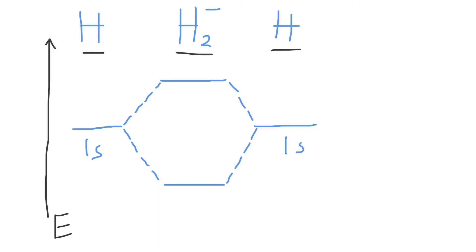Then, just like you would with an energy level diagram or an electron configuration diagram, you need to draw in your valence electrons for the atomic orbitals and the molecular orbitals. How many valence electrons does each individual hydrogen atom have? Each one has one individual valence electron.